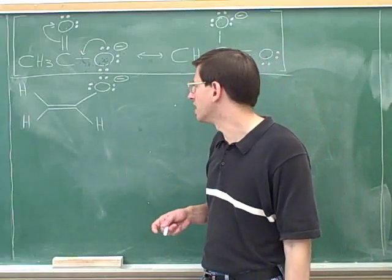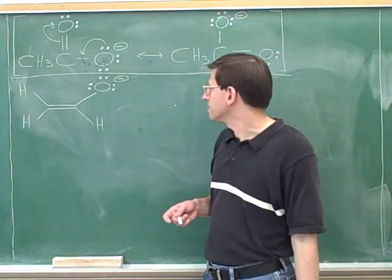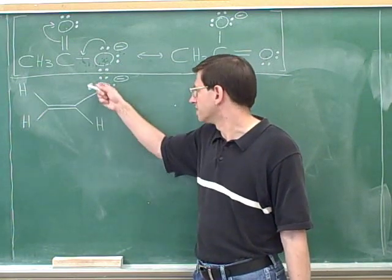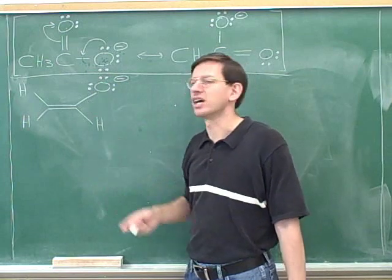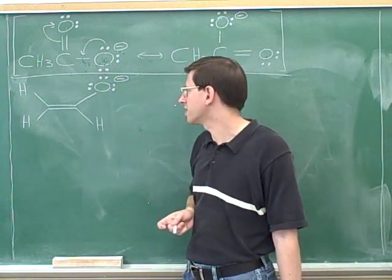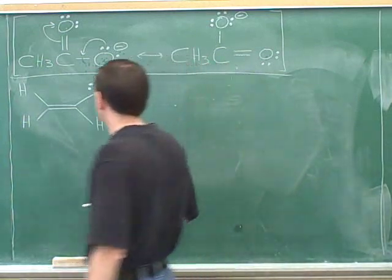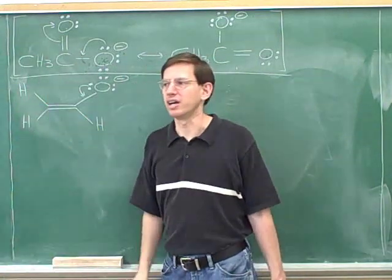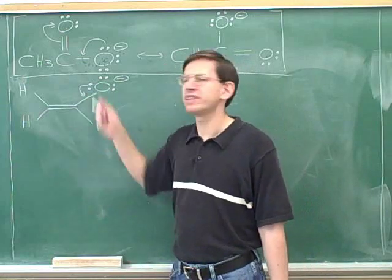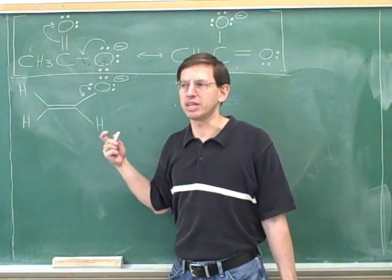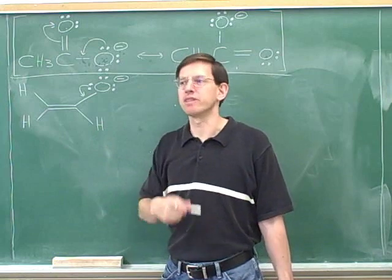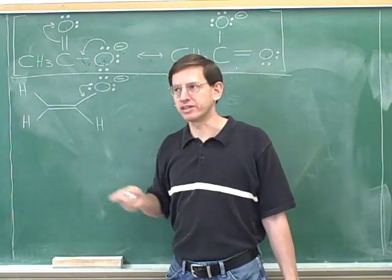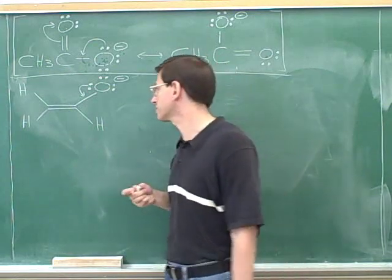Let's go through another example of resonance. In this resonance structure, or in this picture of this anion, we have a negative charge on this oxygen. So let's try to draw another resonance structure by taking this lone pair and moving it into a pi bond. Remember that when we say we're moving the lone pair, that's really just a figure of speech. The electrons are not really moving around, but it helps us to think of moving the electrons around as a tool for correctly drawing the resonance structures.